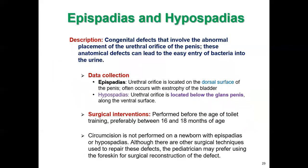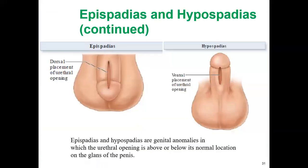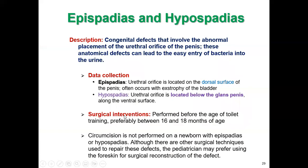These conditions are most common in males. The most common signs and symptoms include urethral opening located on the ventral surface, which is called hypospadias, or on the dorsal surface, which is called epispadias, with respect to the penile shaft.